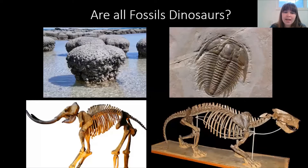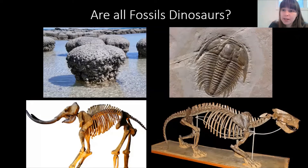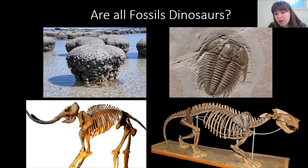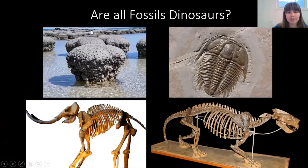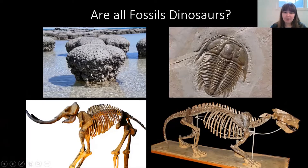A lot of times when people think of fossils, the first thing they think is dinosaurs. But there are actually fossils from animals and plants that existed before dinosaurs ever existed, and also from after dinosaurs went extinct. The top two pictures here are both creatures that existed before dinosaurs. This fossil in the top left is called a stromatolite — it's actually a fossil of ancient bacteria, which is even older than dinosaurs.